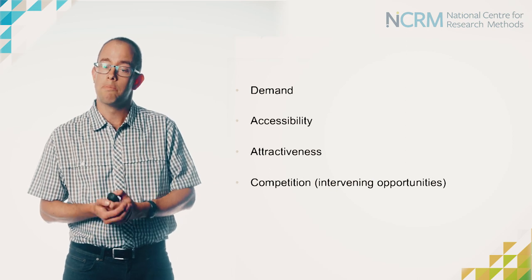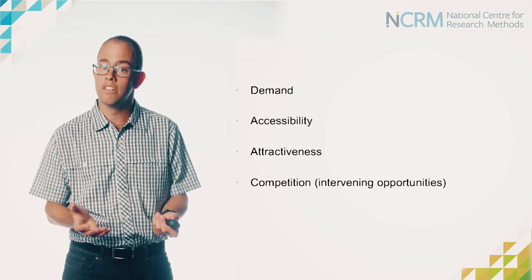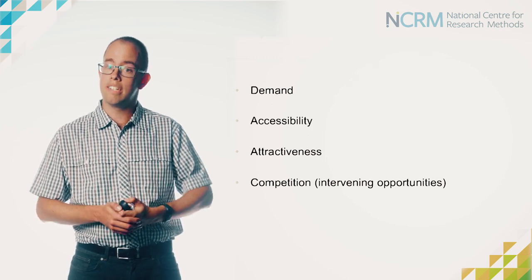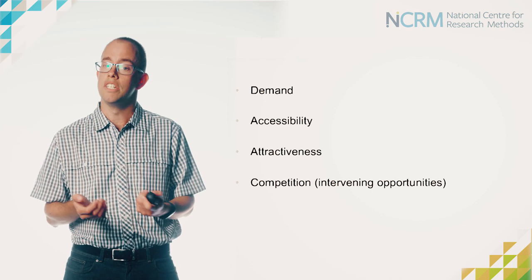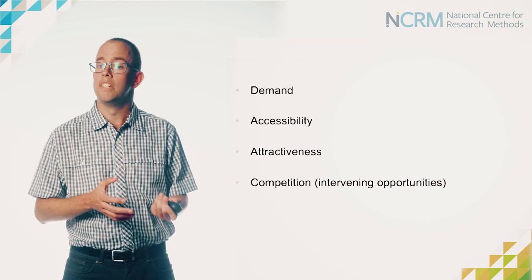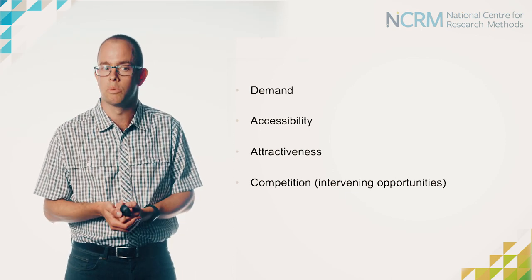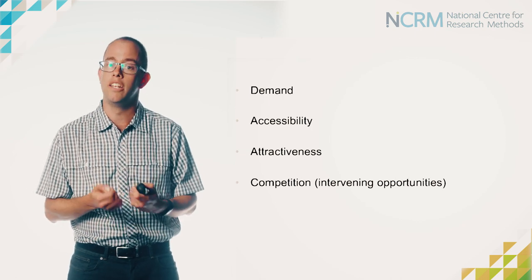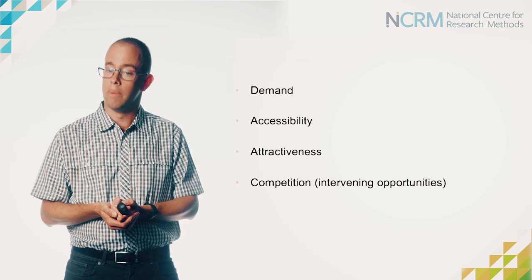As you thought through that activity you were probably thinking about a number of different concepts related to that application. You were thinking about the underlying demand in each one of those origin zones — in this case, the money that people had to spend. You were trying to allocate that money to the different stores, and in doing so you probably thought about how attractive each of those stores might be, recognising that some were larger than others. You probably thought about geographical proximity or accessibility, recognising that people might want to shop closer to where they live or work. And crucially you recognised that this was complex because there was competition or intervening opportunities — consumers having to make a decision about where to shop based on a range of alternatives.